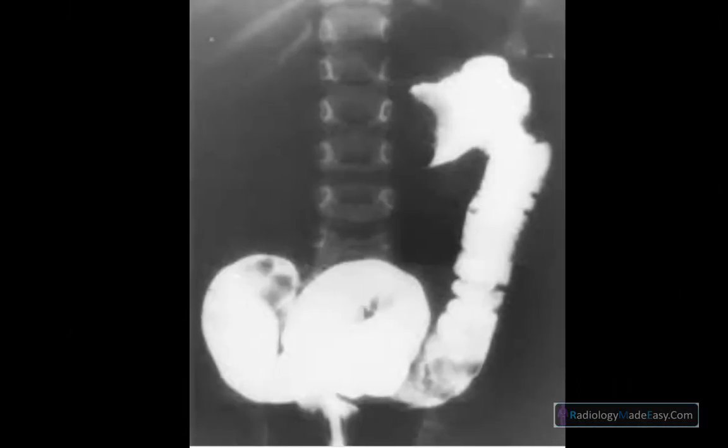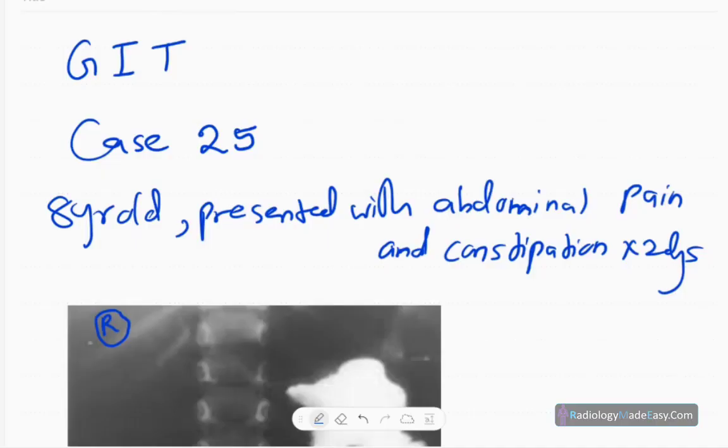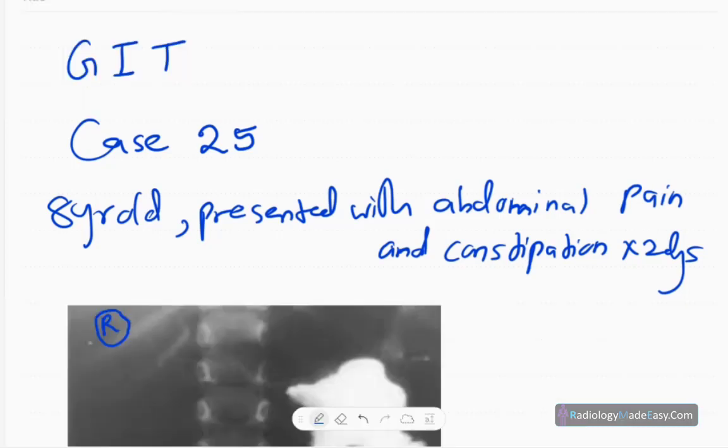Welcome back. Today we are going to case number 25 in GIT contrast studies. Our case today is an 8-year-old patient who presented with abdominal pain and constipation for two days duration.